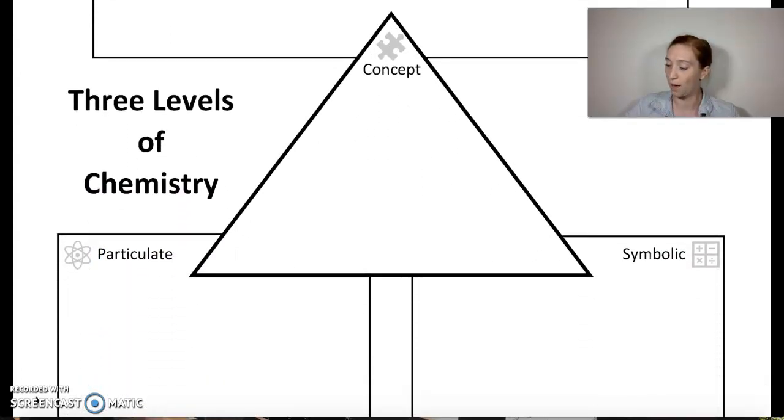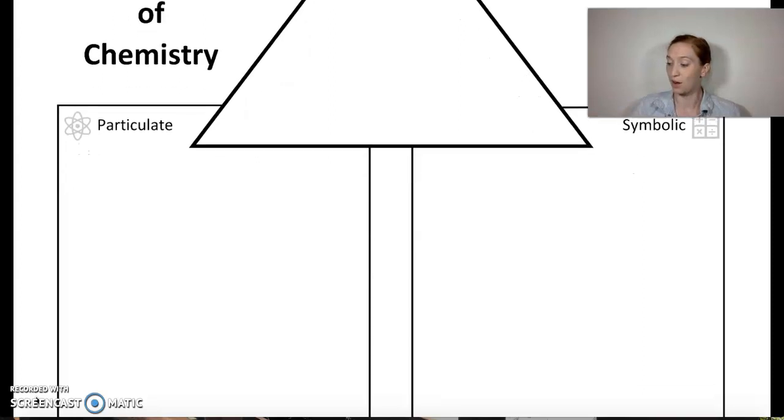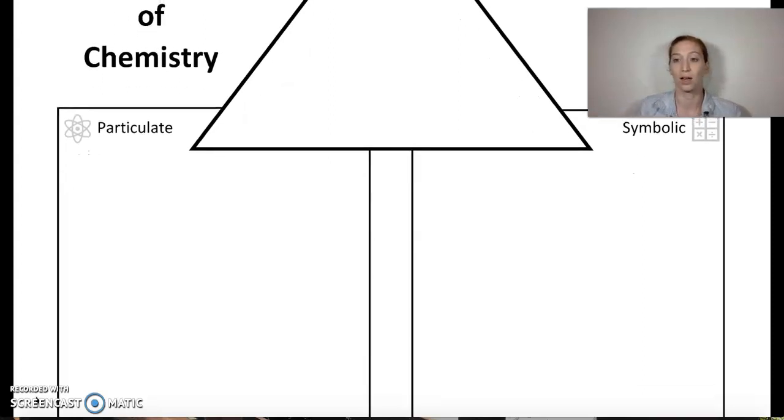We also have things at the particulate level. That's going to be the things that we can't see, the microscopic small particulate nature of matter. And then our third level is symbolic, and this is going to be things that we would represent numerically, mathematically, potentially with different relationships.